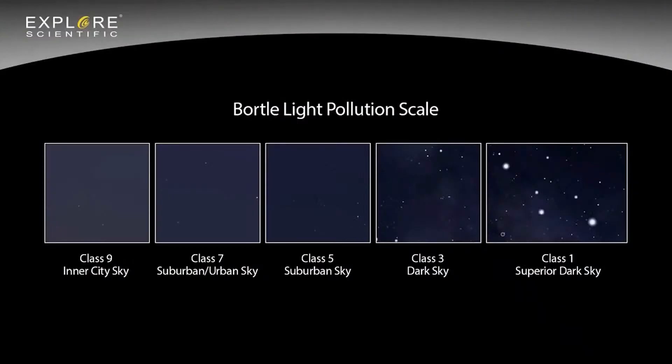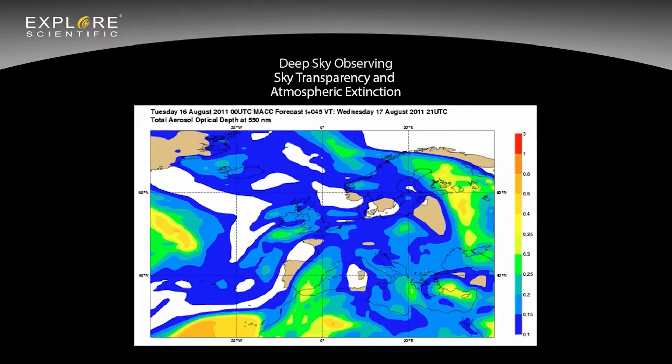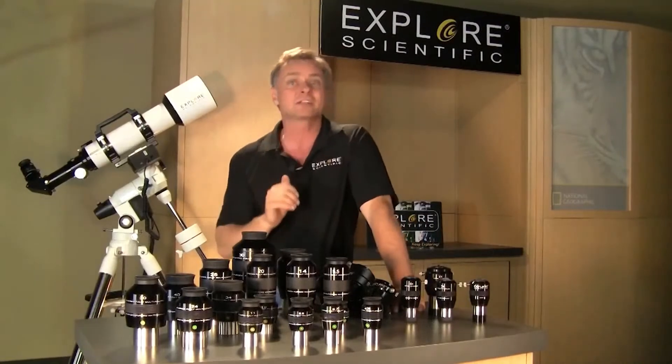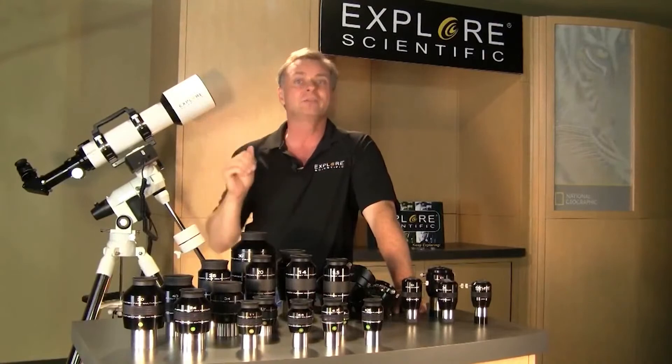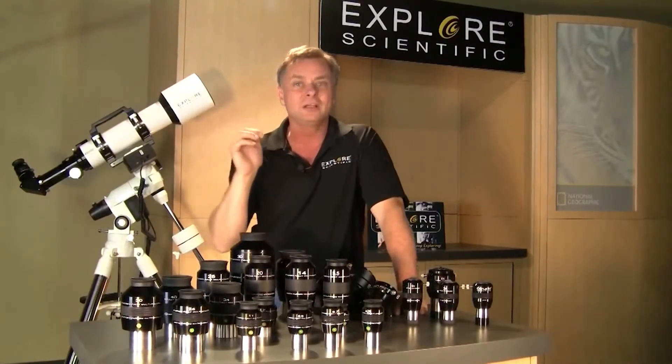Class 9 on the Bortle Scale is the most light-polluted sky, where you can barely see any stars at all. Class 1 is perfectly dark sky conditions, where the sky is black to the horizon. There's another aspect very important to astronomers: sky transparency and atmospheric extinction. It's possible to be under a dark sky but not be able to see many stars due to poor sky transparency or atmospheric extinction. The very best dark sky sites are far from city lights, at high elevation, with smooth terrain and very little water vapor or aerosols in the atmosphere.